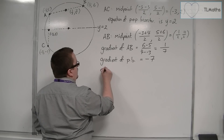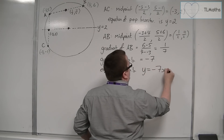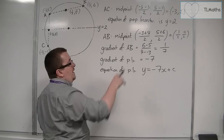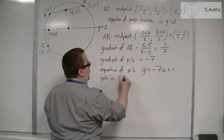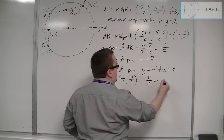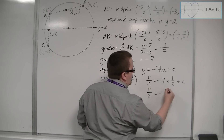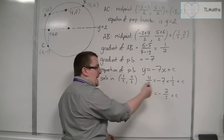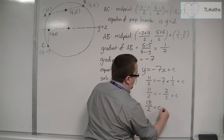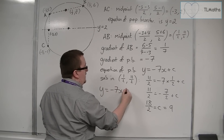The equation of the perpendicular bisector is y equals minus seven x plus c. To work out c, substitute in the midpoint one-half, eleven-halves. So eleven-halves equals minus seven times one-half plus c, which gives eleven-halves equals minus seven-halves plus c. Adding seven-halves to both sides gives eighteen-halves equals c, which is nine.